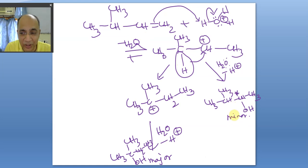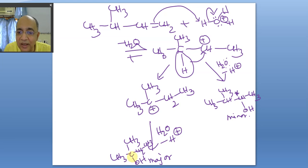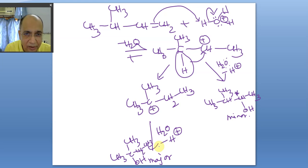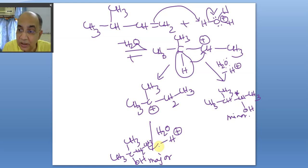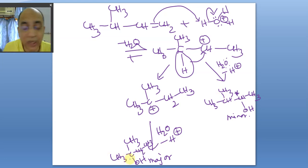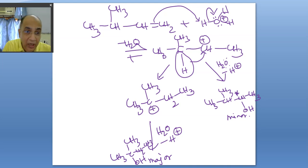If you are asked how many alcohols are produced when this compound is hydrated, the answer is three, because the rearranged major product has a chiral center giving a dl pair (two stereoisomers), and the minor product is a separate structural isomer — so two chiral stereoisomers plus one achiral = three total.